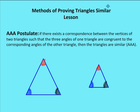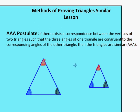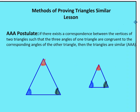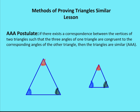So in this case, we have two triangles. Let's call them ABC and DEF. Between the two triangles, I know that angle A is congruent to angle D, angle B is congruent to angle E, and angle C is congruent to angle F. So I can say now by the AAA postulate that triangle ABC is going to be similar to triangle DEF.